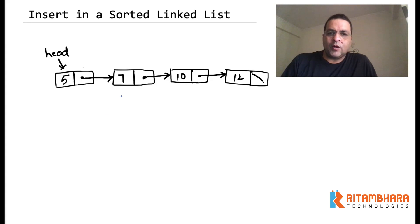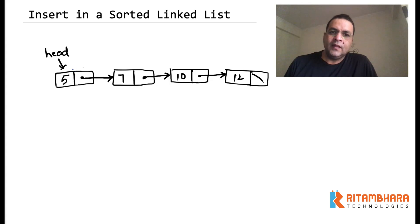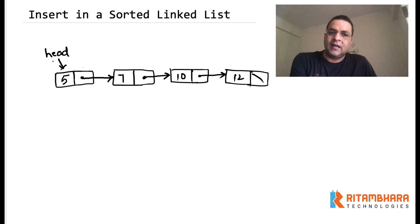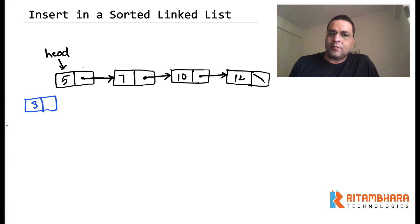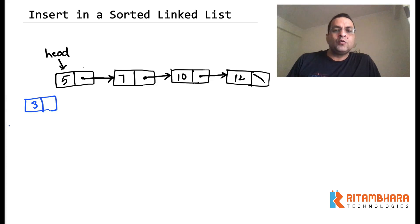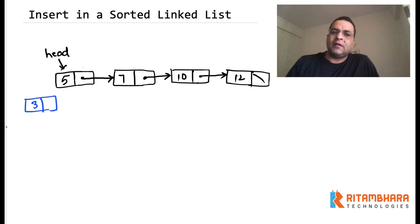There are two or three possibilities. One possibility is that we may end up inserting at the head of the list. Another possibility is that if we are inserting a larger value then we may end up inserting at the tail. Or the third possibility is that we may end up inserting in between. All of these scenarios are important because they will give us the test cases to test our code and make sure that our code is running fine for the boundary conditions.